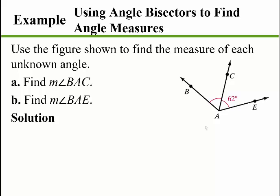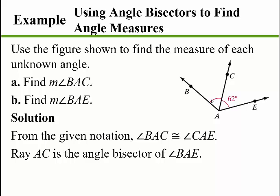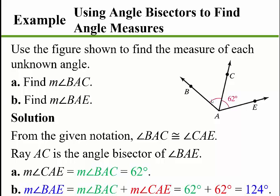Now let's use an angle bisector to find angle measures. We're given that angle CAE is 62 degrees. By the tick marks and curve marks in the figure, they indicate congruent angles, so ray AC is the angle bisector of angle BAC. That means the measure of angle CAE equals the measure of angle BAC, which is also 62 degrees. Finally, the measure of angle BAE equals the measure of angle BAC plus angle CAE — both are 62 degrees — so angle BAE equals 124 degrees.